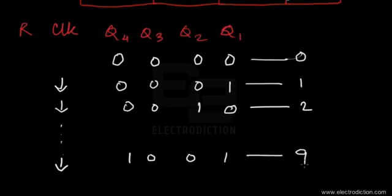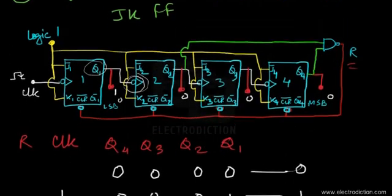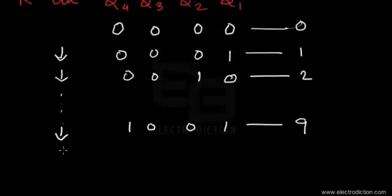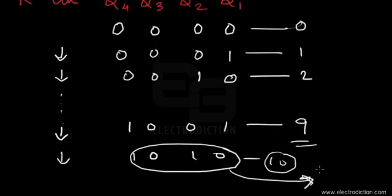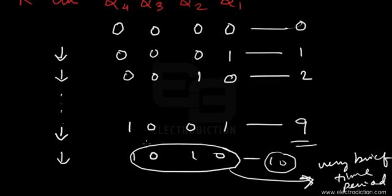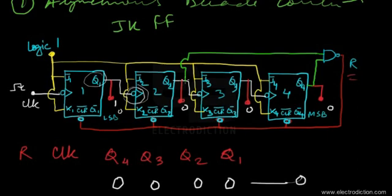The count continues progressing with subsequent clock pulses until it reaches the state 1001, which is the ninth state and the final valid state of this counter circuit. Upon the arrival of the next clock pulse after the ninth state, the counter enters the invalid tenth state, which remains at the counter output for a very brief time period.